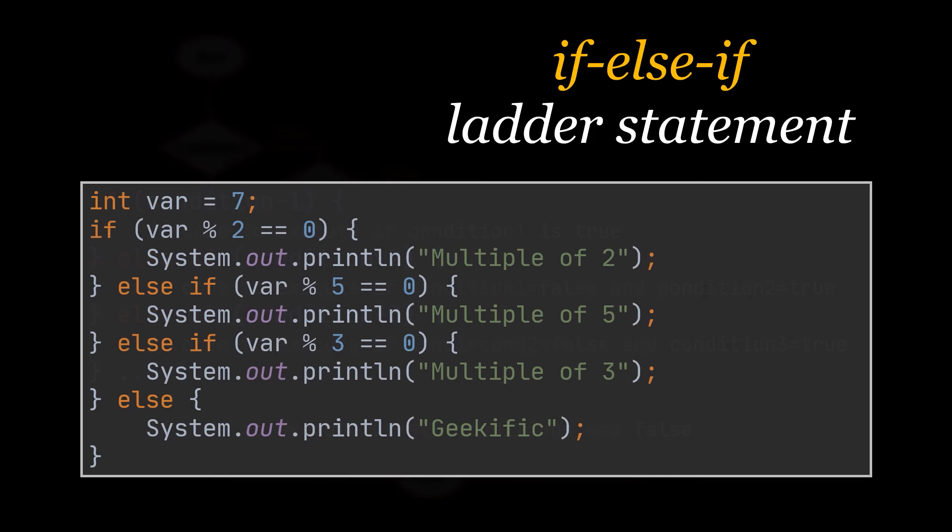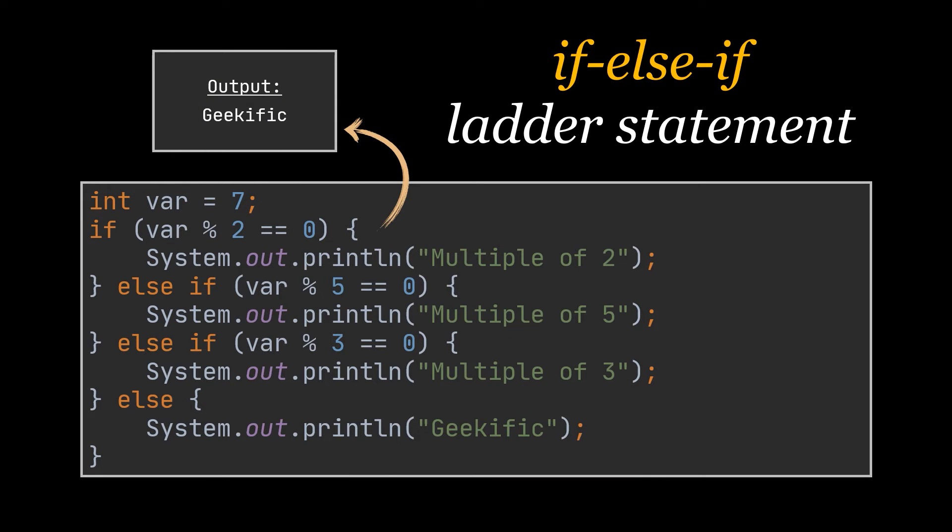In this if-else-if ladder example we are checking if the given variable, which in our case is fixed to seven, is a multiple of either two, three, or five. If it isn't a multiple of either of them, then Geekific is printed out. In this example Geekific is actually the output that will be printed out, as seven is a prime number.